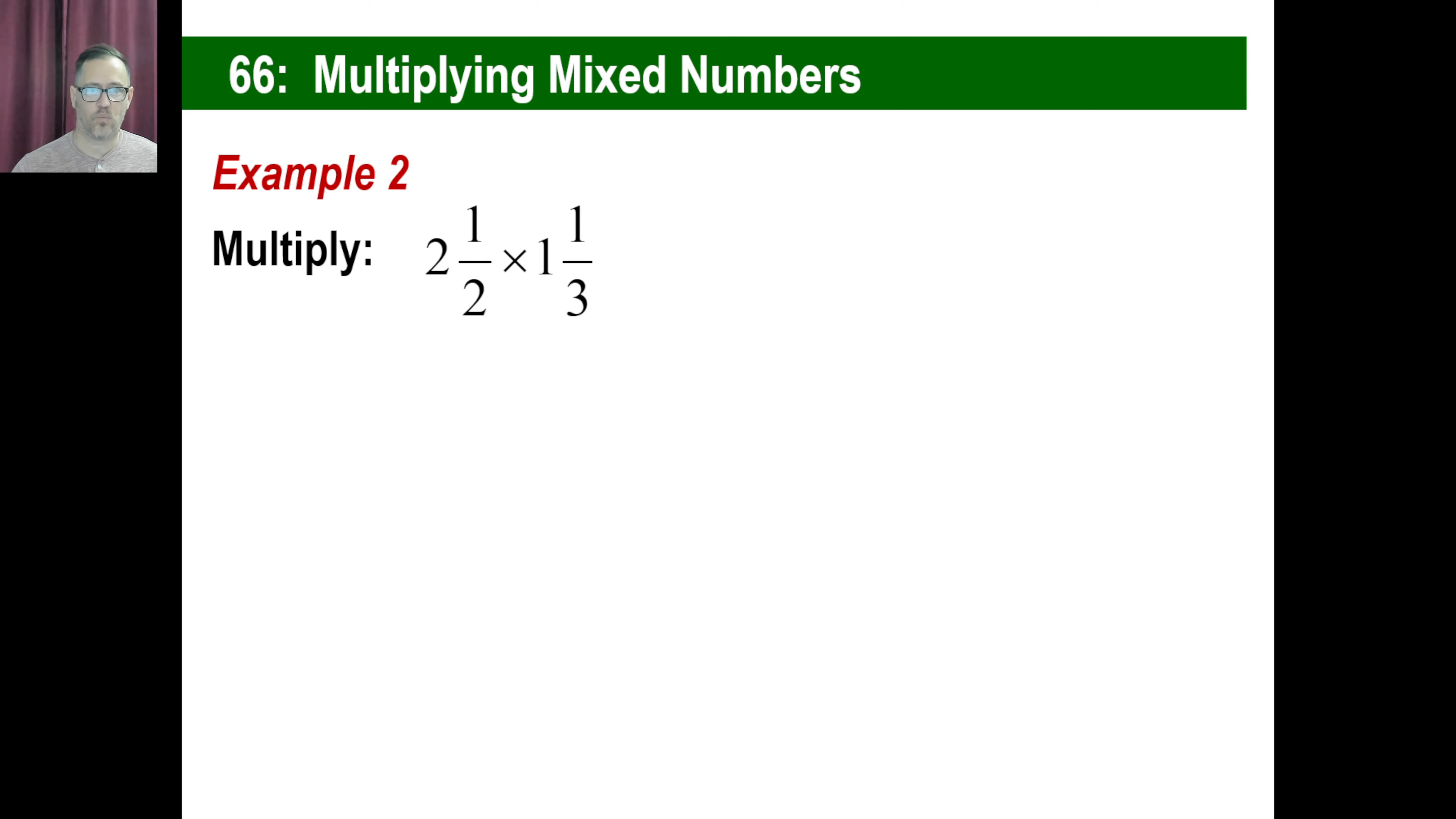Two and a half times one and one-third. You try it. Pause it and try that. Do the same exact steps we just did. You should have got five halves times four-thirds. You can cancel that out. That's going to be two. Five times two is ten divided by three. Ten divided by three is three and there's one-third left over.